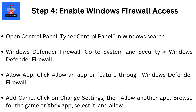Go to System and Security, then Windows Defender Firewall. Click 'Allow an App or Feature through Windows Defender Firewall.' Click Change Settings, then Allow Another App. Browse for the game or Xbox app, select it, and click Allow.